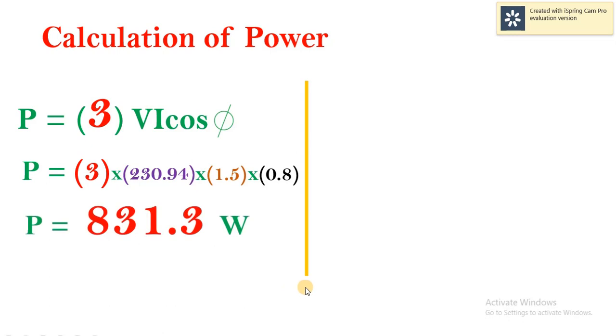Now, coming to the second equation, P equals root 3 Vi cos phi. We have to take into consideration that all the values we are going to substitute in this equation should be line values.